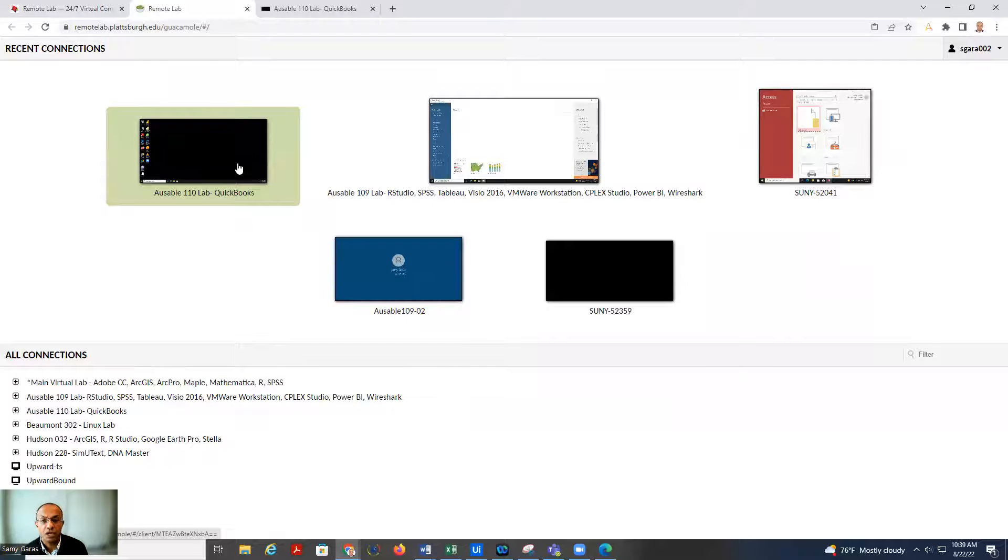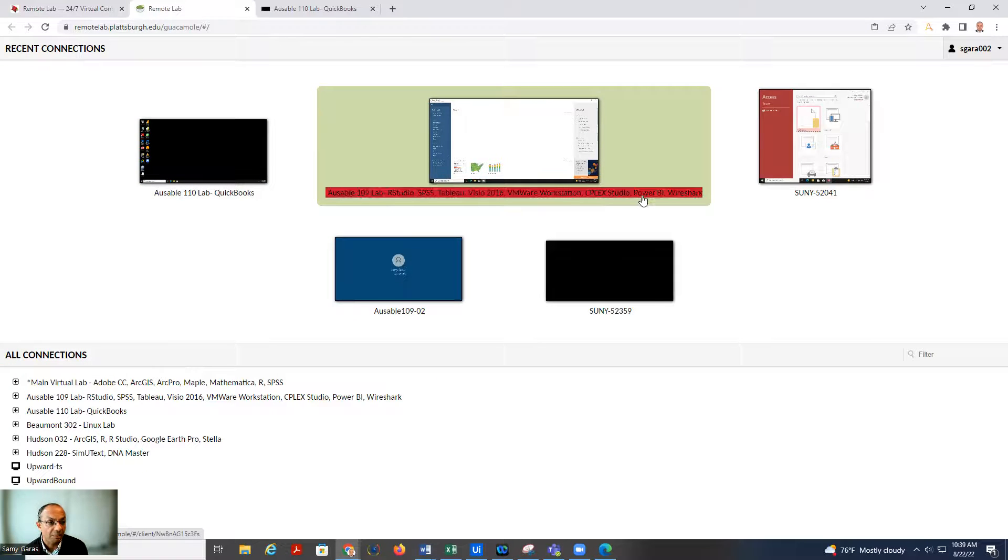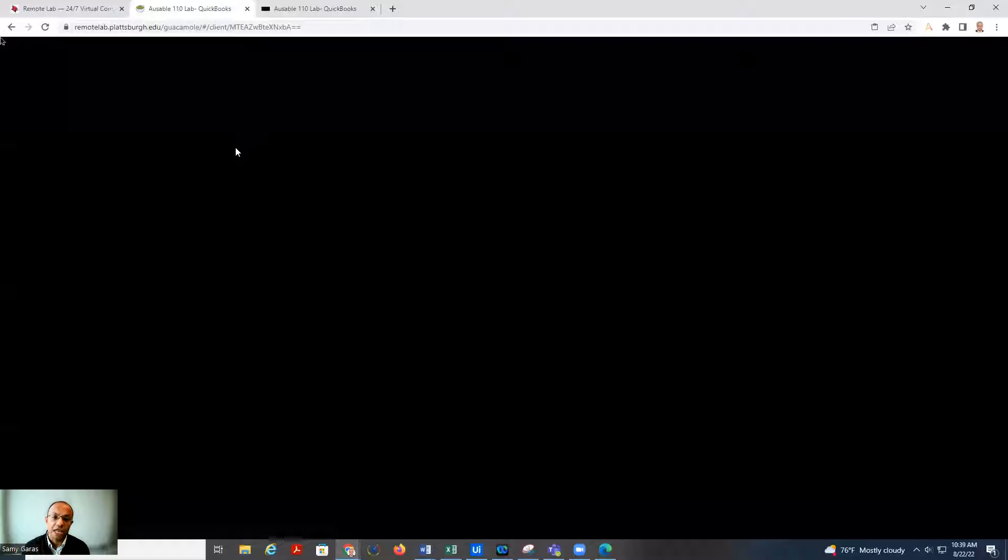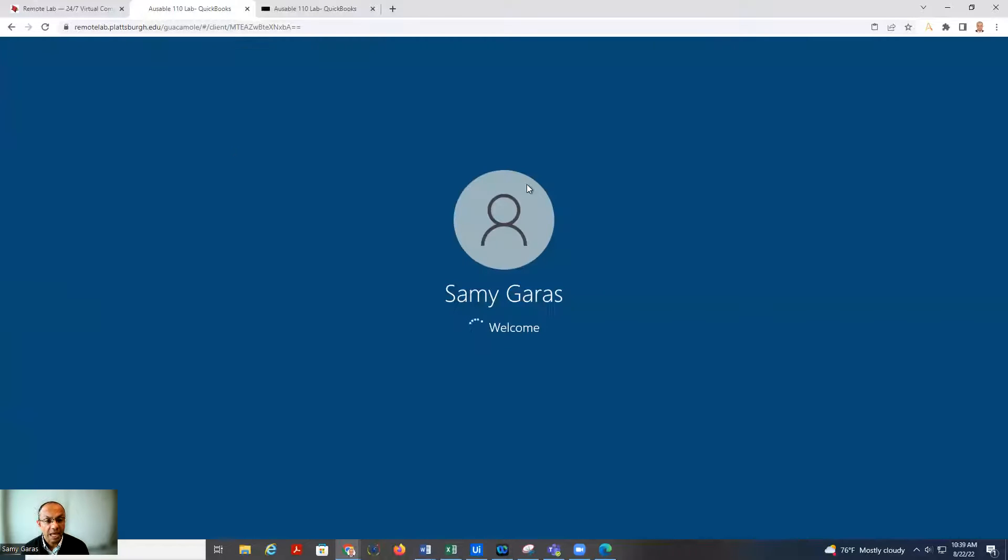We have OSABLE 110 and OSABLE 109. You can see here Power BI in OSABLE 109, but it also exists in 110. Once you click here, it will connect you to our lab where it asks for your credentials. Once you enter it, it will take you to the desktop of our remote lab and you will see Power BI here where you can open it, you work on it, you save your data and then submit.